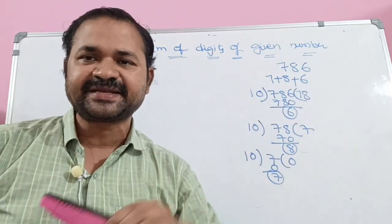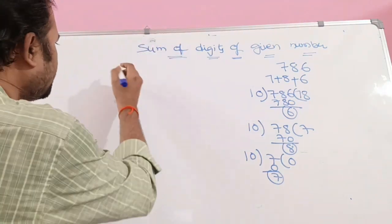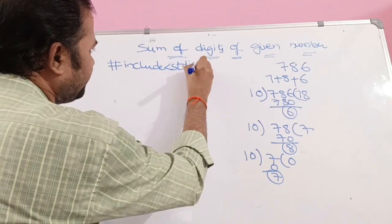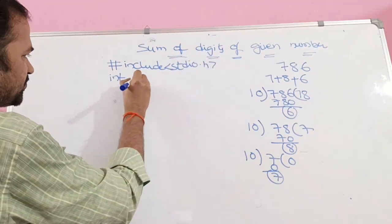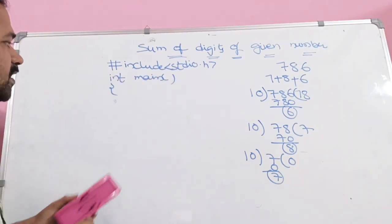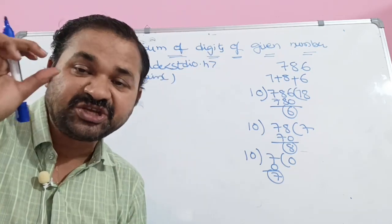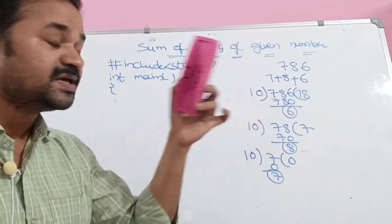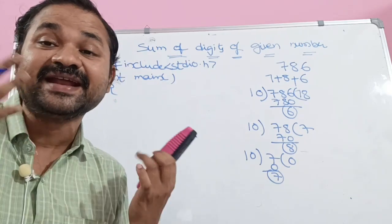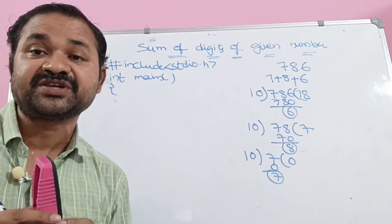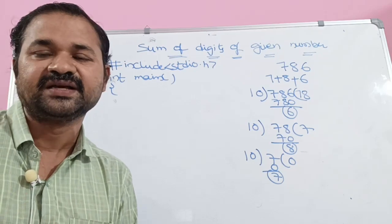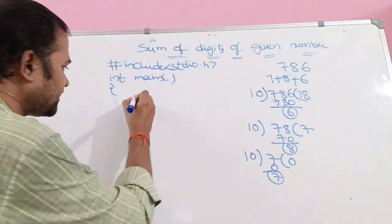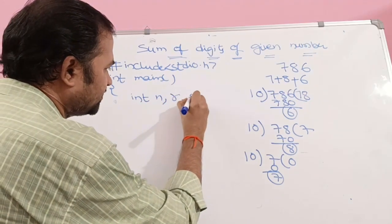First we explain on the board, then we will execute it practically on the system. First of all we need to include stdio.h, because we use printf and scanf functions which are defined in the stdio header file. Then we define the main function. The return type of main is integer, because when the program compiles and executes successfully, main returns 0. We declare variables: n to read a number, r for remainder, and sum initialized to 0. Declaration: int n, r, sum = 0.